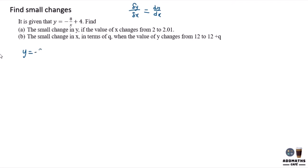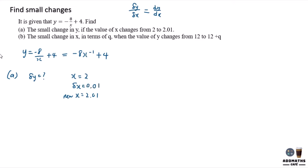In this first question, y is equal to negative 8 over x plus 4. We need to find the small change in y, which is delta y, when the value of x changes from 2 to 2.01. So the small change of x, delta x, is 0.01. You are required to find delta y.